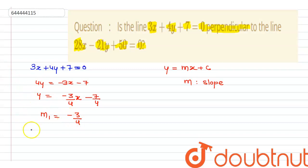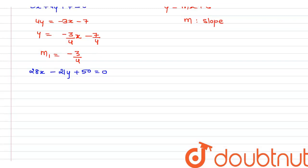From here we can get the second line slope also. This is 28x - 21y + 50 = 0. So we can get this slope here. This will be 21y = 28x + 50, so the y value will be equal to 28/21 x + 50/21.